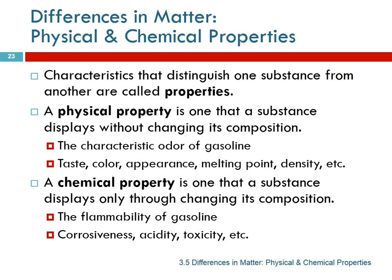Matter is different. Different types of matter are different — they have different characteristics and properties. So when we say a 'property,' those are the characteristics that distinguish one substance from another. And we're going to divide properties into categories, too.